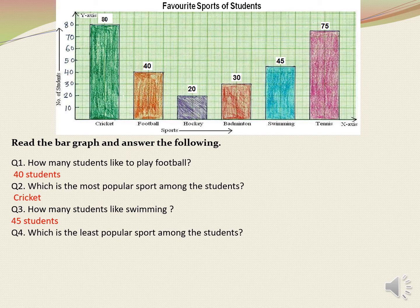Which is the least popular sport among the students? To find out the answer, we need to see the bar which is the shortest. The purple bar is the shortest, and it shows hockey. Therefore, the answer is hockey.